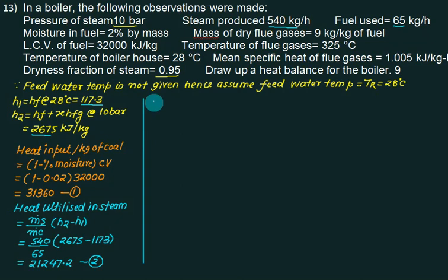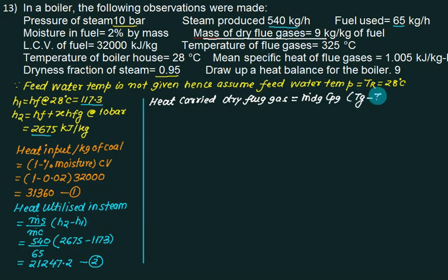Then the third part: heat carried by dry flue gas. He has given the mass of dry flue gas, that is 9 kg per kg of coal. So this is mdg, where DG stands for dry gas, multiplied by Cp of gas, multiplied by (Tg minus Troom). All calculations are per kg of coal. It is already 9 kg per kg of coal. Cp is given as 1.005 kJ/kg K, gas temperature is 325°C, and all quantities are in kilojoules per kg of coal.